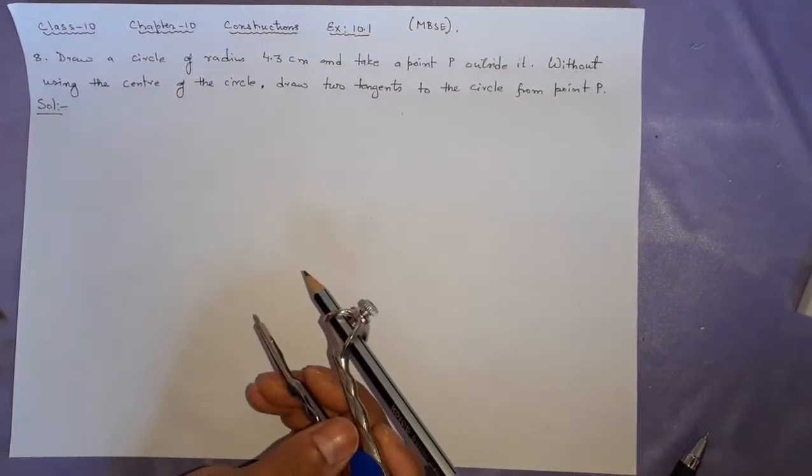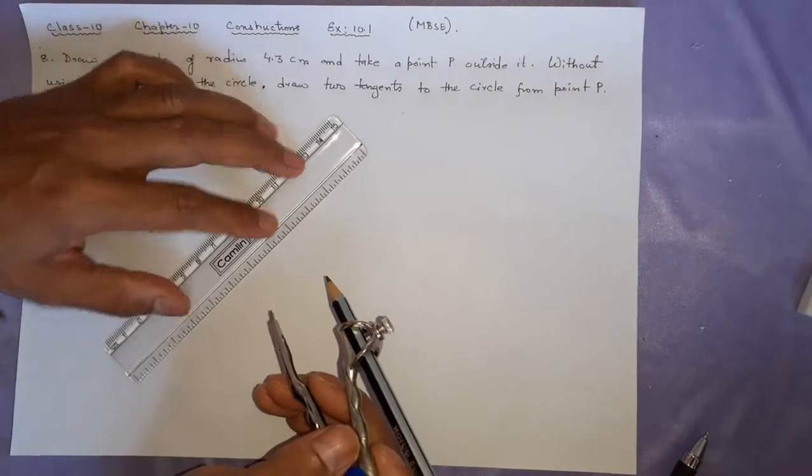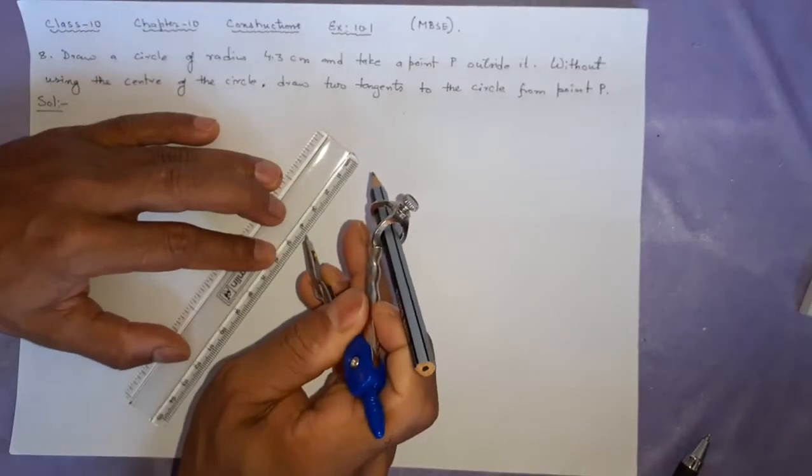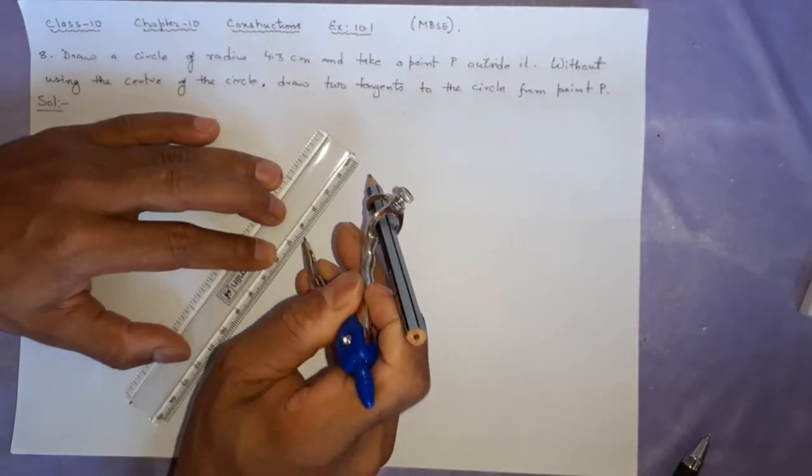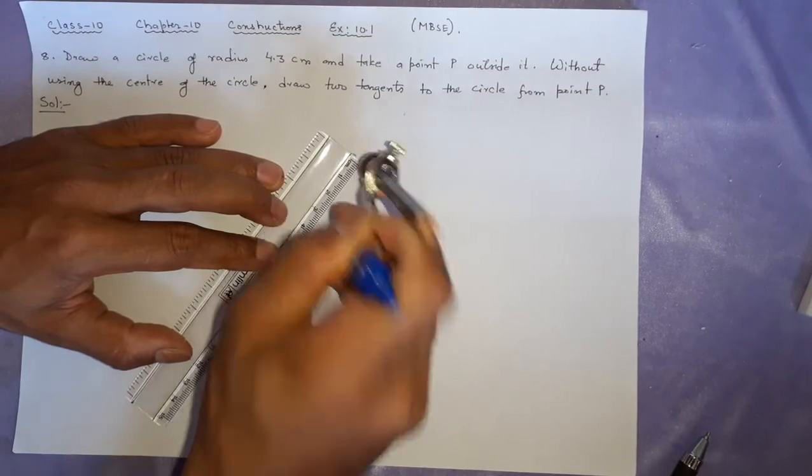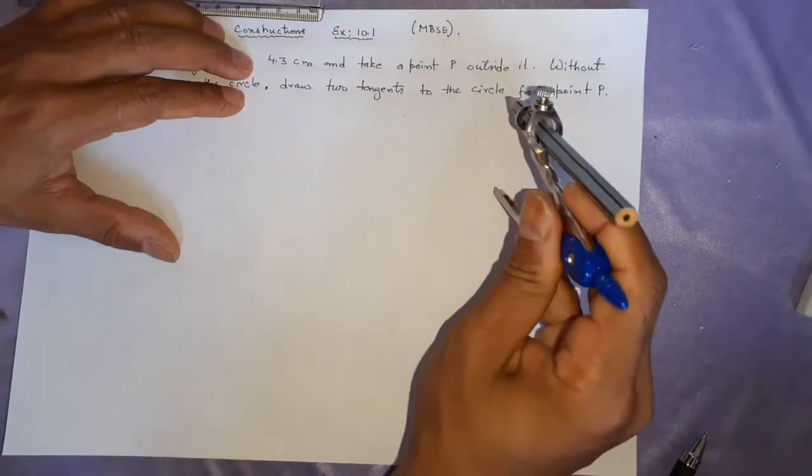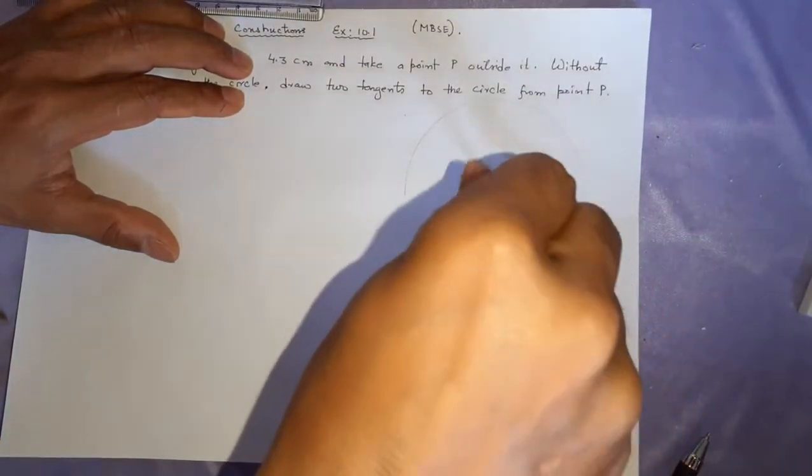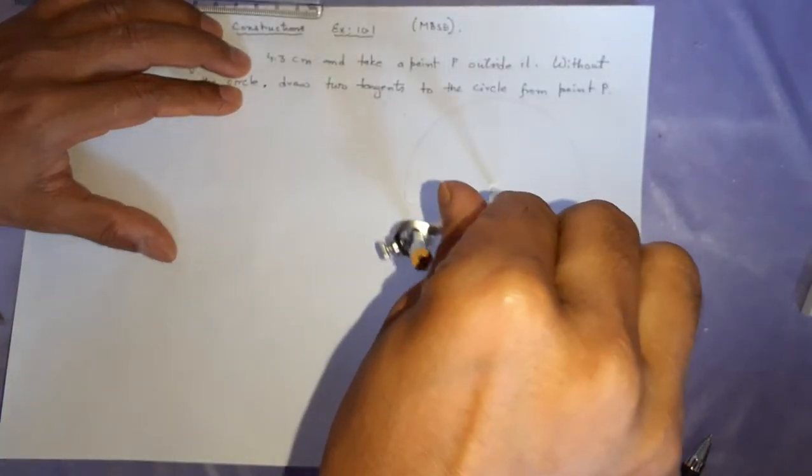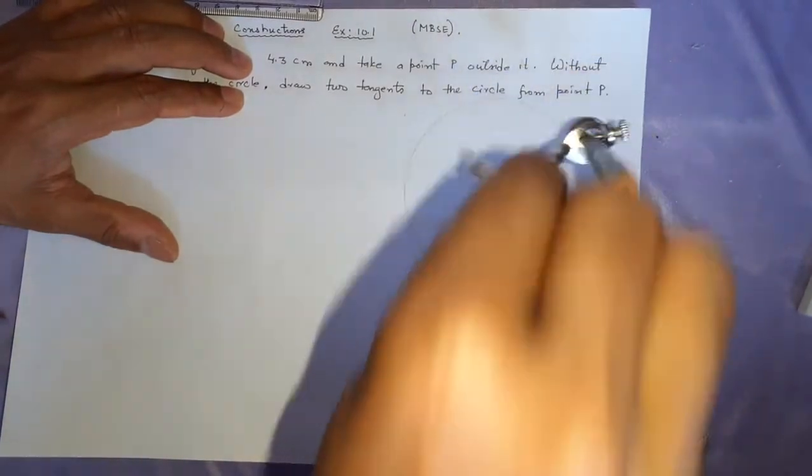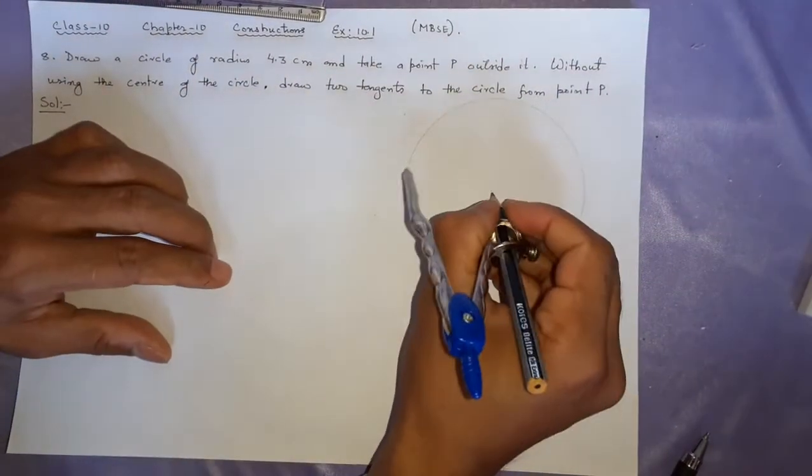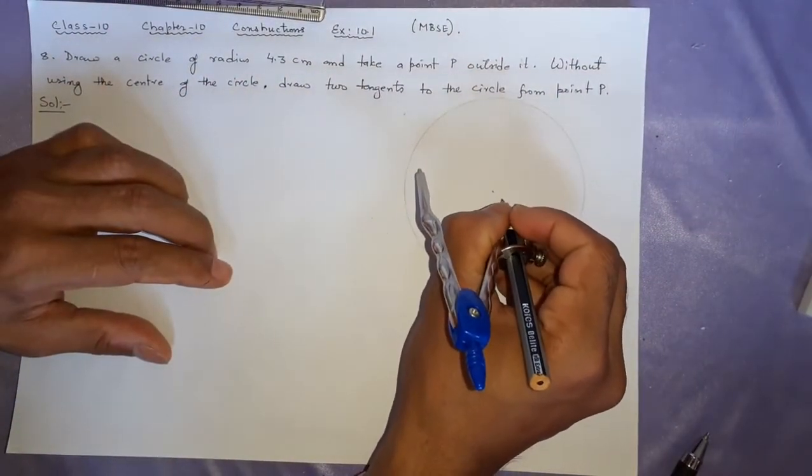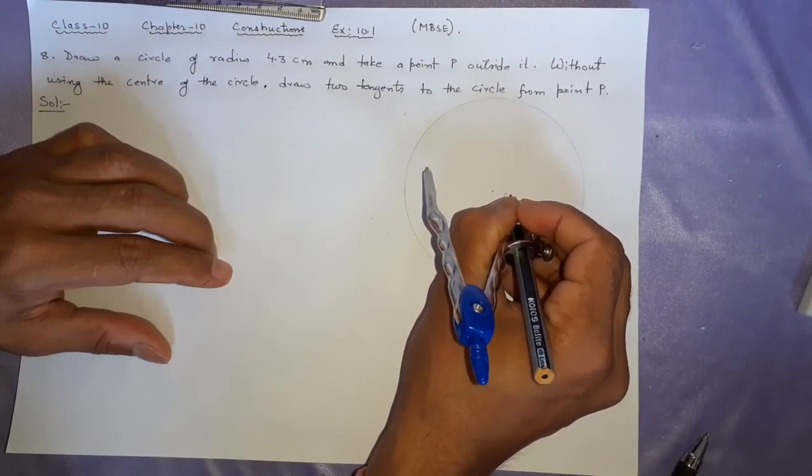Draw a circle of radius 4.3 cm, so measure 4.3. 4.3 is almost here. I am making it a little right this time because left side is going to be used more. This is O here.